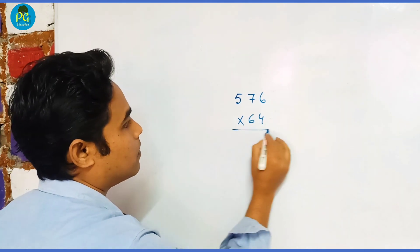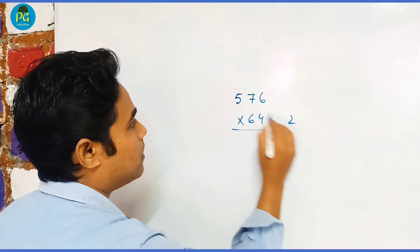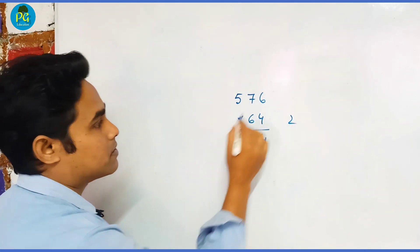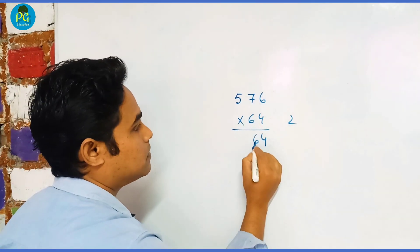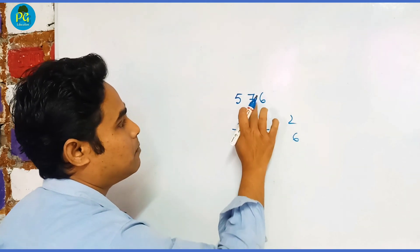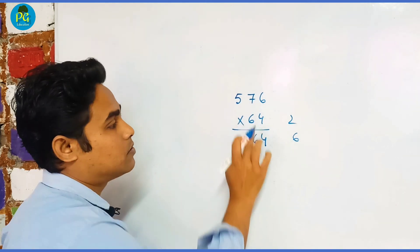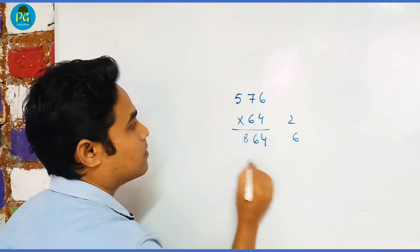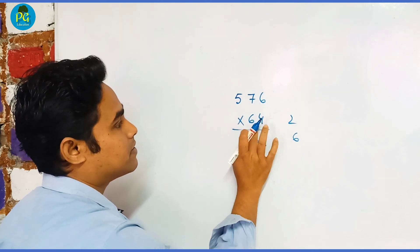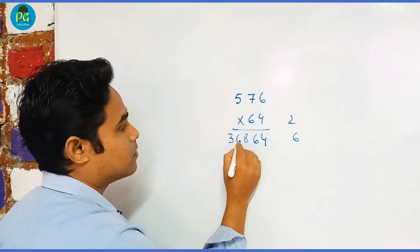6 × 4 = 24, carry 2. 7 × 4 = 28 plus 6 × 6 = 36, that's 64, plus 2 = 66, carry 6. 5 × 4 = 20 plus 7 × 6 = 42, so 62, plus 6 = 68, carry 6. 5 × 6 = 30, plus 6 = 36.